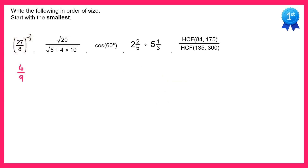Now let's move on to the second one. We're going to simplify square root 20 using surd rules, so that's square root 4 times square root 5. On the bottom you need to use the correct order of operations: do 4 times 10 first, that's 40, and then add 5 to this, so 45. So on the bottom we have square root 45.